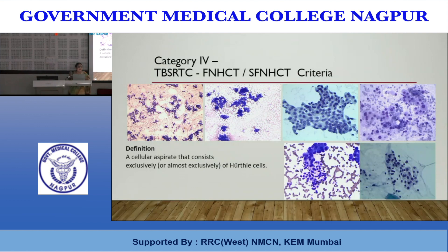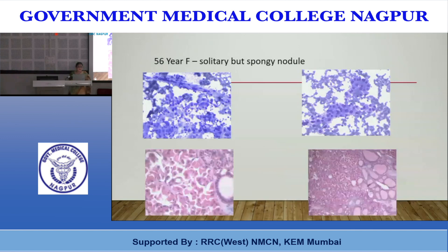Hürthle cells are seen singly or in sheets, clusters, or three-dimensional clusters. A flat sheet with dense blue abundant granular cytoplasm is characteristic — it looks green on Pap stain and dense pink on H&E. The cells are polygonal with central or eccentric nucleus with prominent nucleoli. If you see follicular cells, colloid, or polymorphic lymphocytes, rule out colloid goiter and lymphocytic thyroiditis. A 56-year-old female with a solitary spongy nodule, showing almost 100% Hürthle cells with capillaries wrapping the cells, was reported as Hürthle cell neoplasm — but histopathology showed hyperplastic nodules in multinodular goiter.